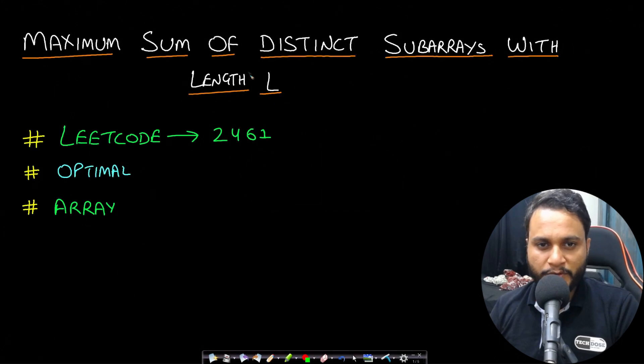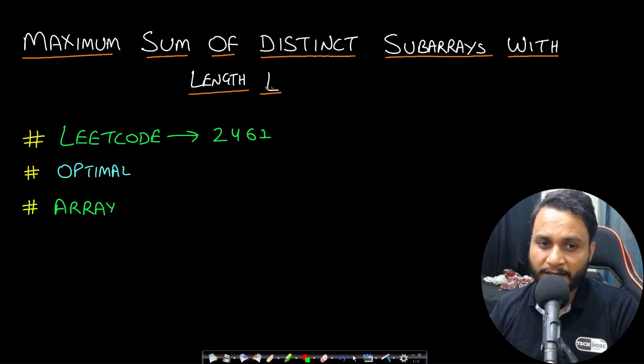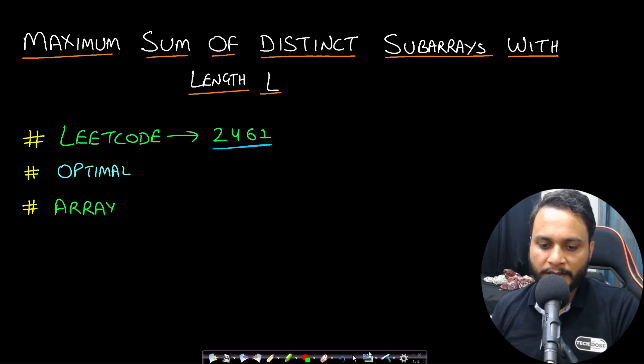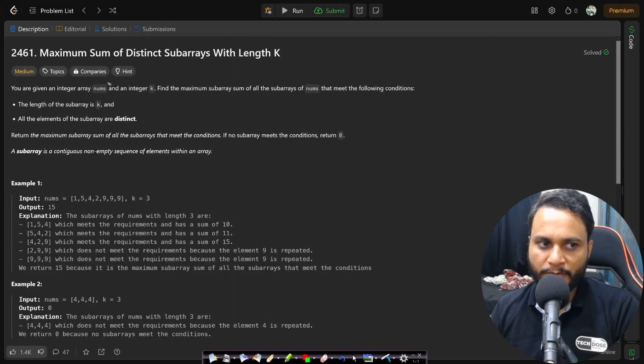Hello guys, welcome back to TakeDoze. In this video we will look at the Maximum Sum of Distinct Subarrays with Length K problem, which is LeetCode number 2461. Let's now look at the problem statement.